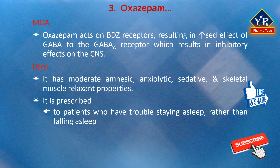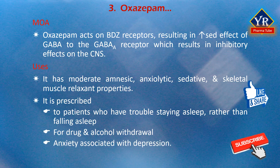Oxazepam is commonly prescribed for anxiety disorders with associated tension, irritability and agitation. It is also prescribed for drug and alcohol withdrawal, and for anxiety associated with depression. Physicians may use Oxazepam outside its approved indications to treat social phobia, post-traumatic stress disorder, insomnia, premenstrual syndrome and other conditions.